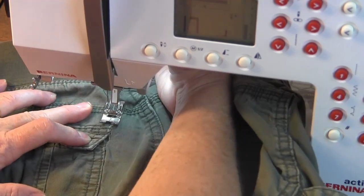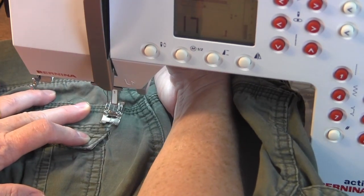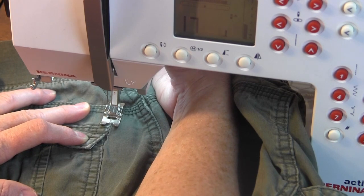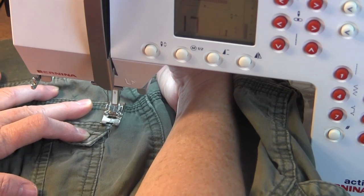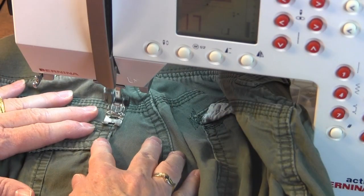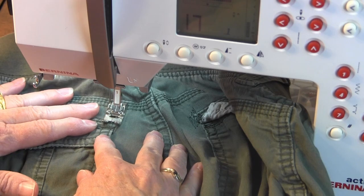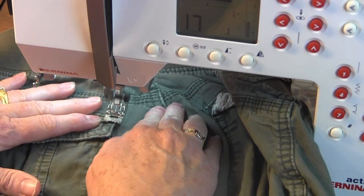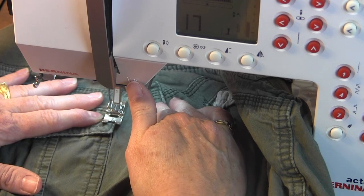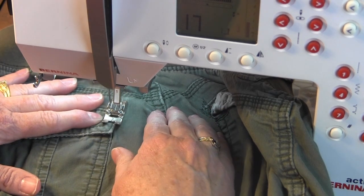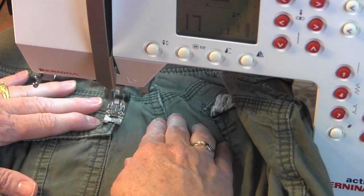Align the right side opening of the presser foot where you want to start stitching. Start stitching across the area to be patched. When you get to the end of where you want to stitch, press the back button and the machine will start to go backwards.